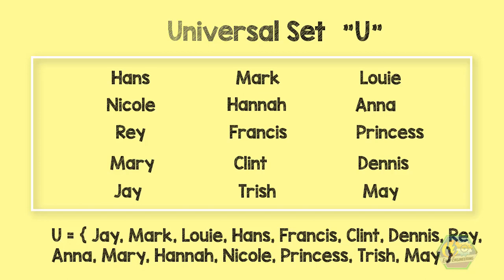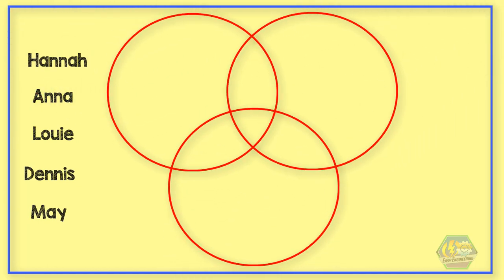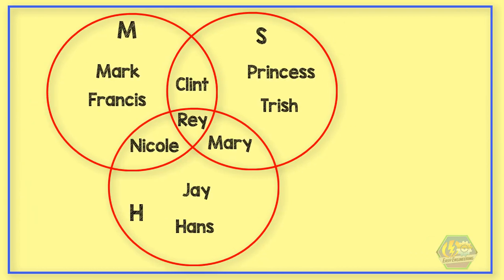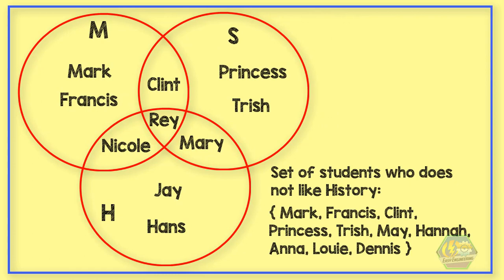Now you can see all the 15 students neatly sorted into what subject they like or not. And then we can do interesting things like this: take the whole set and subtract the ones who like history. We write it this way: the universal set minus the history set is the set Mark, Francis, Clint, Princess, Trish, May, Anna, Hannah, Louis, and Dennis. Or in simpler words, everyone who does not like history.